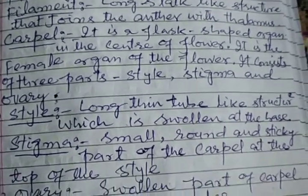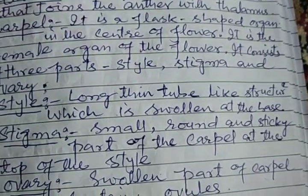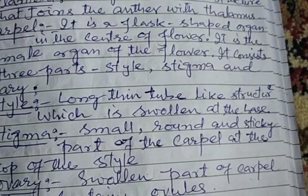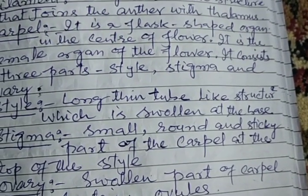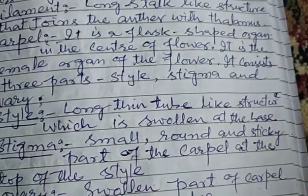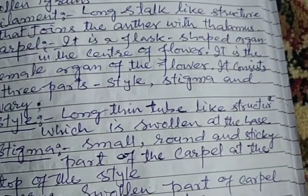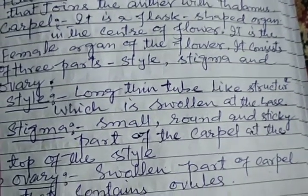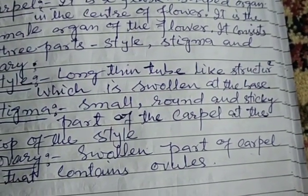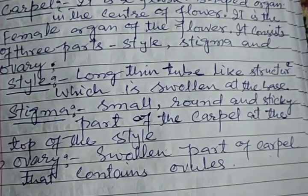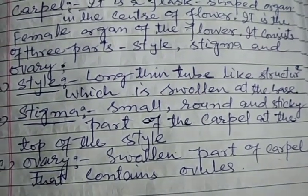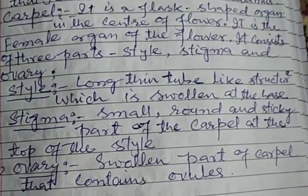The style is a long, thin tube-like structure, broad at the base. The ovary is a small, round, and thick part of the carpel at the top of the style. The stigma is at the top of the style.